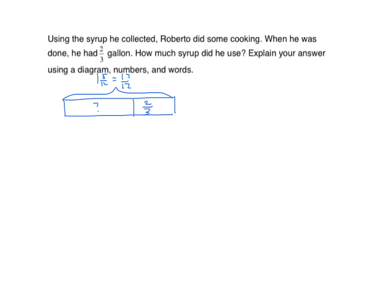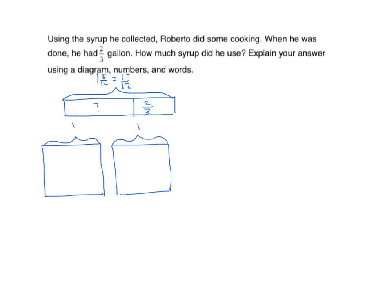I'm going to start with method one. I'm going to draw my rectangular models. I have one whole and I'm going to leave it that way. And my second whole I'm going to partition into twelve equal parts.